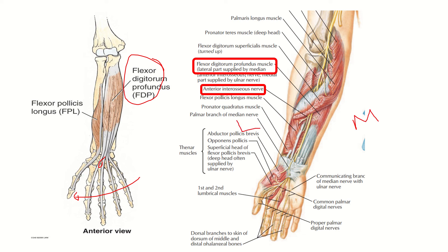We can see that the flexor digitorum profundus is supplied laterally by this nerve. The main trunk is the median nerve, and from the median nerve a branch arises that supplies the lateral aspect of the flexor digitorum profundus — this is the anterior interosseous nerve. So the lateral aspect of the flexor digitorum profundus is supplied by the anterior interosseous nerve, which is a branch from the median nerve.